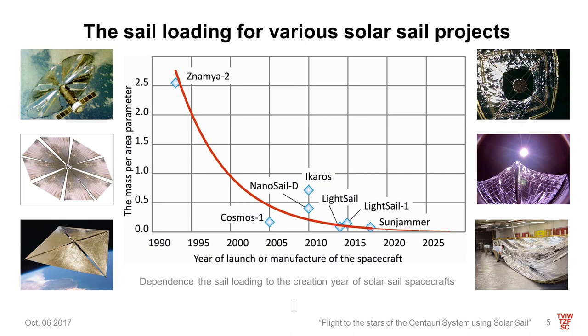Beyond the solar system, the pressure of sunlight and accordingly the efficiency of the solar sail approach zero. In addition, the efficiency of solar sail depends on the sail loading, which is total mass spacecraft divided by the sail area. The smaller the sail ratio, the greater the acceleration from the force of light pressure, and the faster the sail will arrive at the closest chosen star.